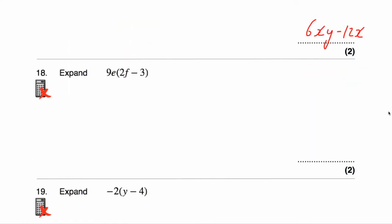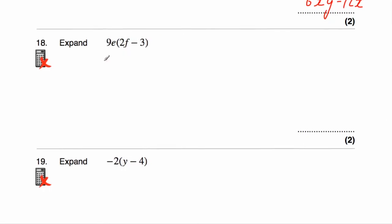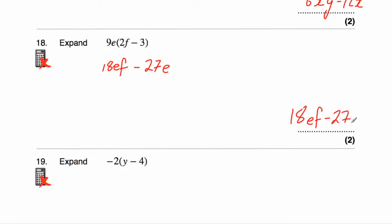Question number eighteen asks us to expand 9e(2f − 3). We need to multiply what's inside the brackets by 9e. Nine e times 2f — nine times two is eighteen — and then we've got our letters ef in alphabetical order. Minus. And nine e times three — nine times three is twenty-seven e. The answer is 18ef − 27e.